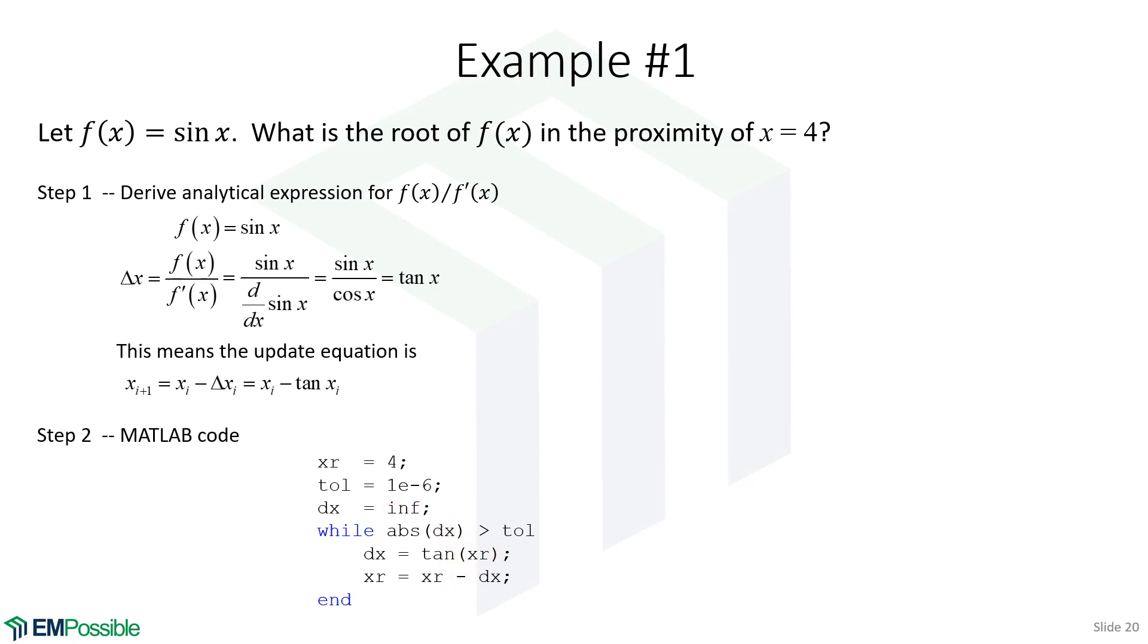The first thing we do is calculate our refinement, dx, which is just tan of our current guess at the root. Then we update our root. Yes, we could say xr equals xr minus tan xr, but then we'd have to recalculate tan xr for the condition in the while loop.